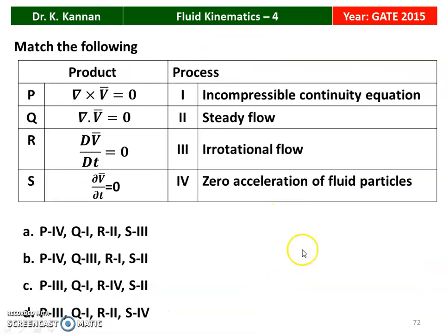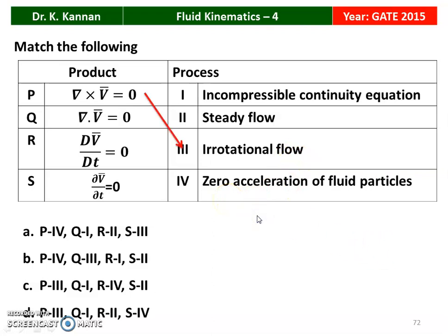The first question from the 2015 question paper: match the following. P: delta cross V vector equal to 0. Q: delta dot V vector equal to 0. R: DV vector by DT equal to 0. S: dou V vector by dou T equal to 0. On the other side we have: incompressible continuity equation, steady flow, irrotational flow, and zero acceleration of the fluid particle. P represents irrotational flow, Q represents incompressible continuity equation, R represents zero acceleration of the fluid particle, and S represents steady flow. Option C is the correct combination.